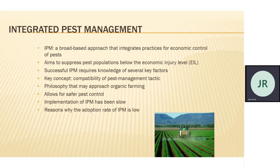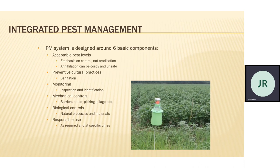What is required is integrated pest management. IPM is designed around six basic components. One: acceptable pest level — some pest level is acceptable if they are not harming very much. Then preventive cultural practices to prevent pest. Constant monitoring is required. Then mechanical controls: barriers, traps, like mosquito nets. Biological control. Then responsible use of pesticide.